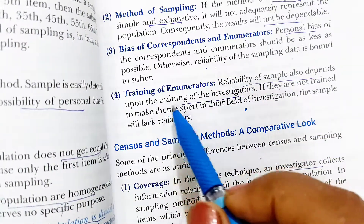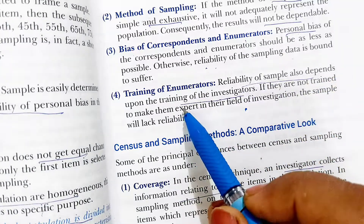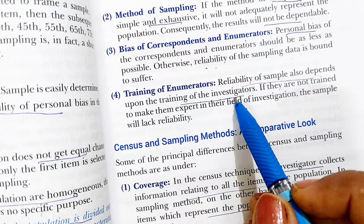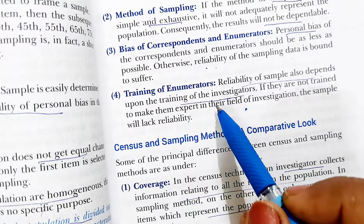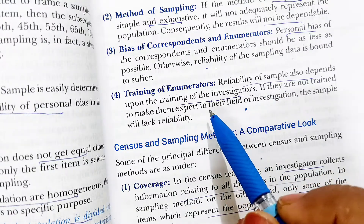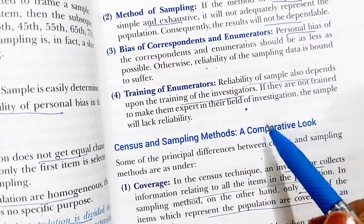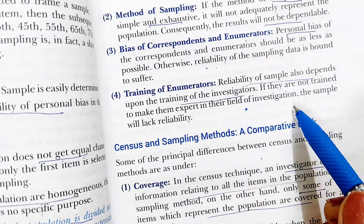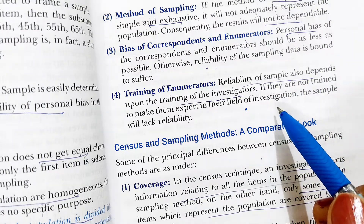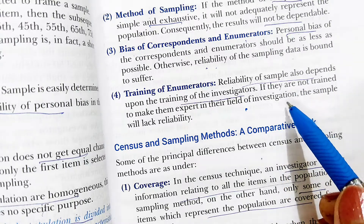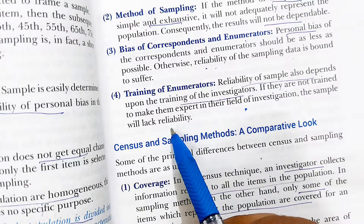The last factor is the training of the enumerator. The reliability of the sample also depends upon the training of the investigator. The enumerator and investigator are the same person who collects the data. If this investigator is not well trained in the field of investigation and is unaware of how to collect the data, then he can make a wrong sample, leading to lack of reliability.